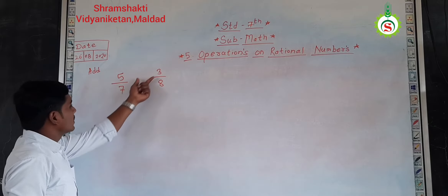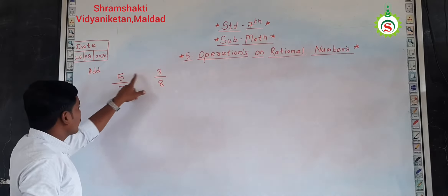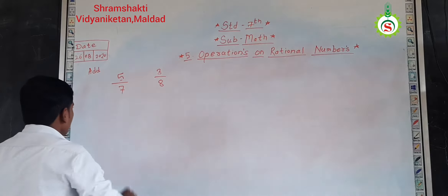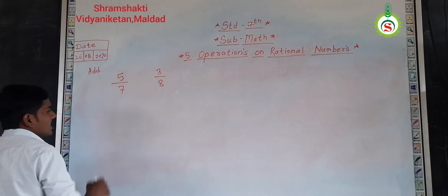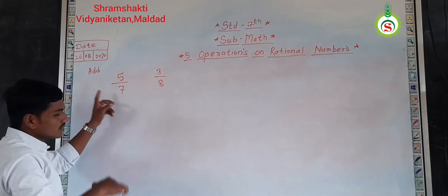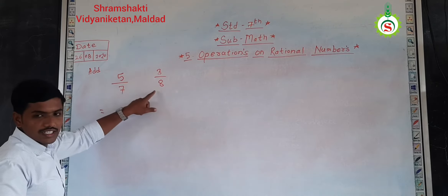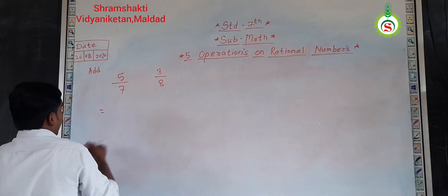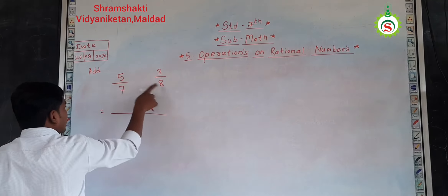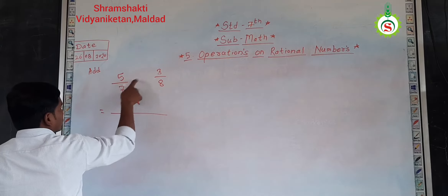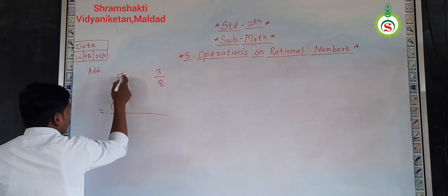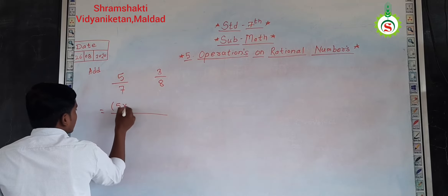Five and three are the numerators; seven and eight are the denominators. So, if I want to add these numbers, what will be the process? As we saw in the last lecture, if I want to add the rational number, I want to take the numerator and denominator. So, at the numerator, I will attach it as a cross multiplication of numerator and denominator. So, first cross multiplication: five by two eight.